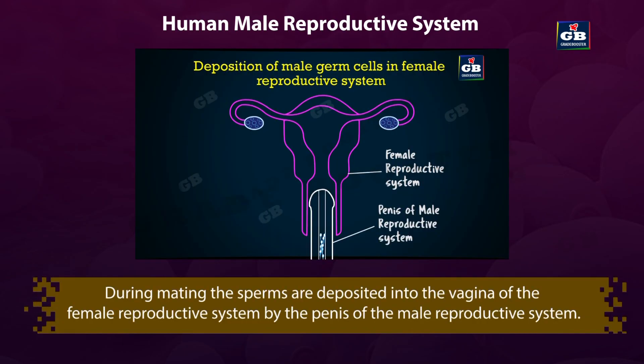During mating, the semen — sperms and secretions — are deposited in the vagina of the female reproductive system by the penis of the male reproductive system.